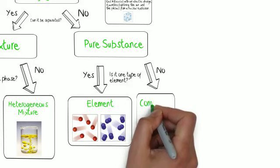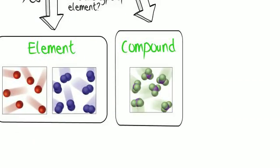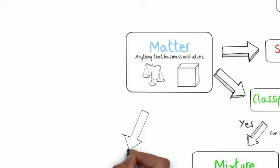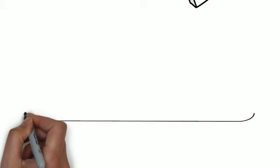If the answer is no, then we have what are known as compounds. Something like NH3, ammonia, is a compound. CO2, carbon dioxide, is a compound. It's more than one type of atom.